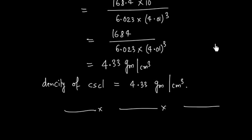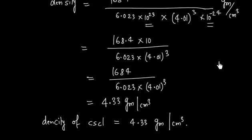In summary, if the cation and anion radii are given, we can calculate the cubic edge length. And if we know the total contribution of atoms inside the unit cell, we can calculate the density of the unit cell, which equals the density of the solid.